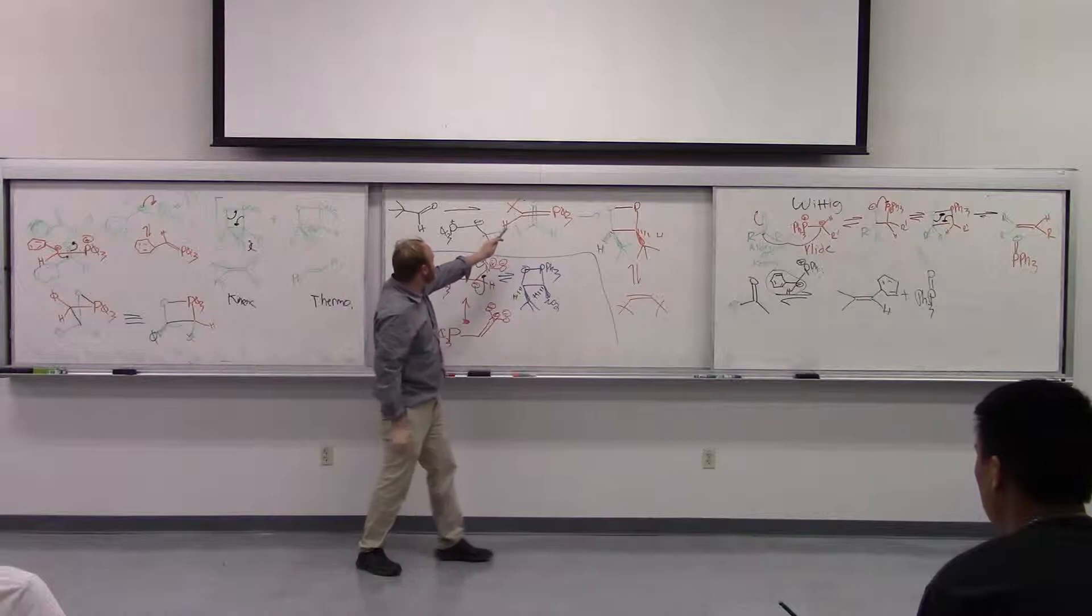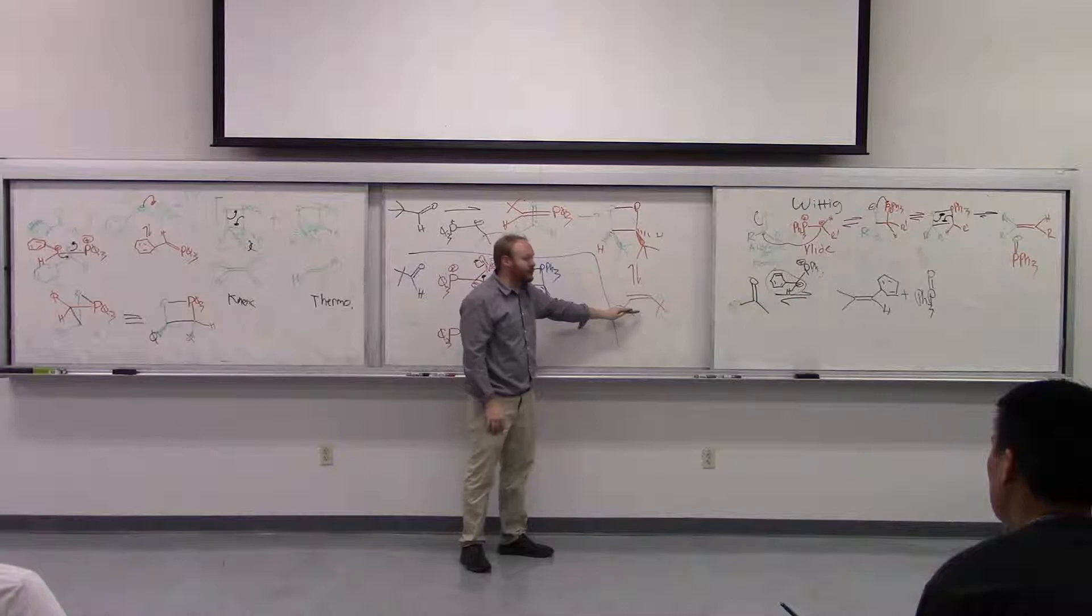So pretty much, let me sum it up here. In this case, the equilibrium is going to favor this, and it's not going to be able to go back, and it will just collapse to give us our cis product.